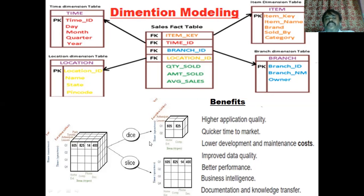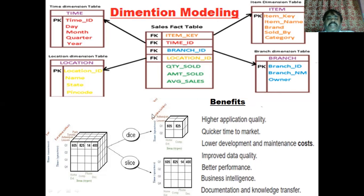There are two important concepts related to dimensional modeling in data warehousing: dicing and slicing. Dimensional modeling comes from a multi-dimensional cube structure that stores organizational data with respect to location, time, and product over a period of time. Slicing tries to provide feature-based selection from multi-dimensional to, for example, two-dimensional data. Dicing, on the other hand, selects a subset of this multi-dimensional structure. Those are the main differences between slicing and dicing, which we will discuss further in later classes.